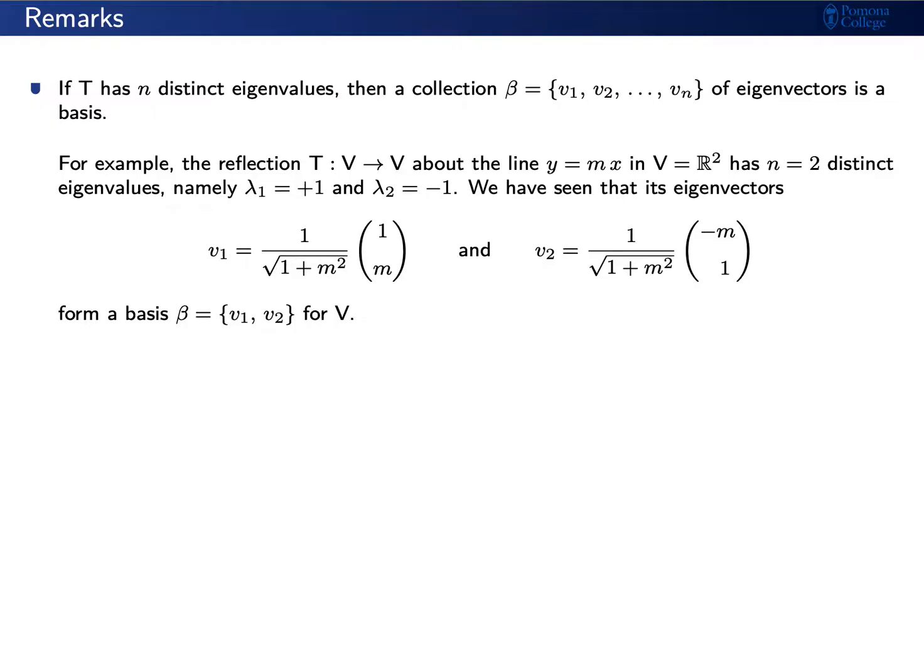We'll give a couple of remarks. If T has n distinct eigenvalues, then the collection of eigenvectors is a basis. We showed this with the example of the reflection about a line y equals mx. We found two distinct eigenvalues, namely plus one and minus one, and hence we found two eigenvectors.